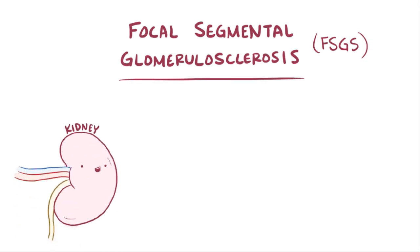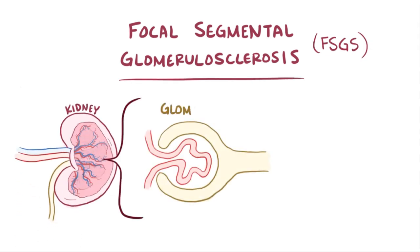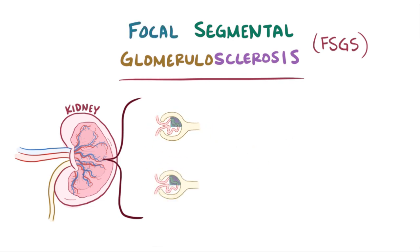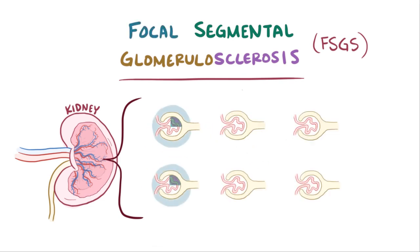Focal Segmental Glomerulosclerosis, or sometimes focal glomerular sclerosis, or just sometimes FSGS, is a type of kidney disease that affects the kidney's glomeruli, which is where small molecules are first filtered out of the blood and into the urine. From the name you have glomerulosclerosis, which indicates sclerosis, or scar tissue, forming in the glomeruli. Segmental means that only a segment or part of that glomeruli is affected, and focal means that among all those glomeruli in the kidney, only some are affected.